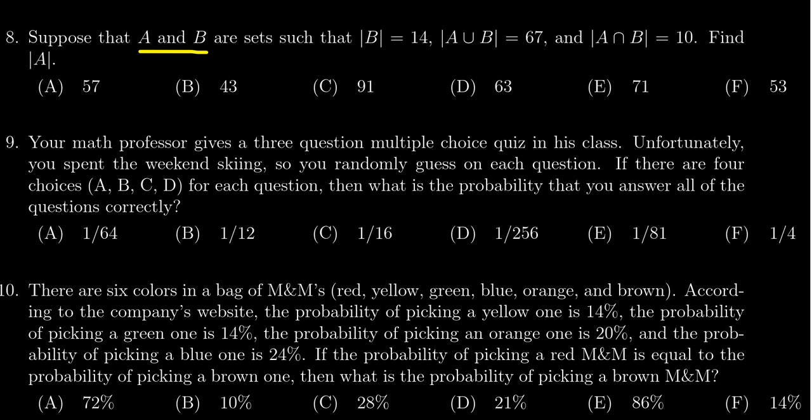We're given two sets, A and B, such that the cardinality of B is 14, the cardinality of A union B is 67, and the cardinality of A intersect B is 10. We want to find the cardinality of A.